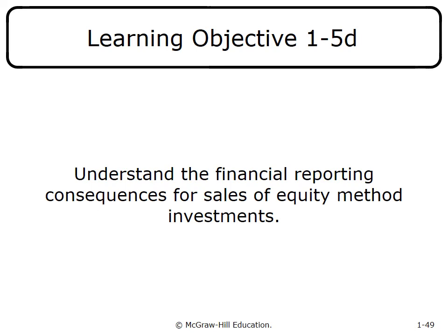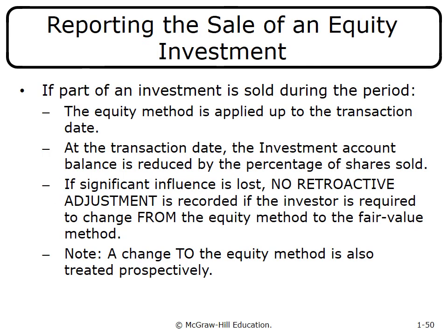When part of an equity investment is sold during the period, two steps are required: first, update the investment account to the date of the transaction for any income earned and dividends declared by the investee; then remove the proportionate share sold from the investment account.